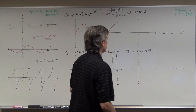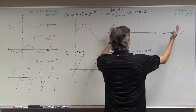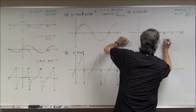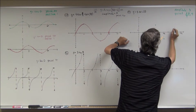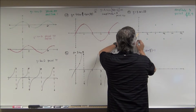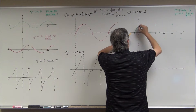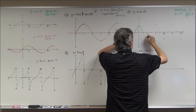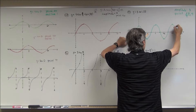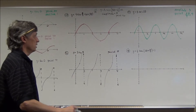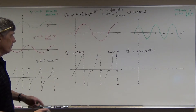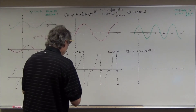My amplitude is 3, so I start at (0, 3), and halfway through at π/2 I'm down at negative 3. Halfway between those is where I cross the x-axis. The graph is squeezed horizontally and stretched vertically. For sine and cosine, get those key points — the maximum values, minimum values, and x-intercepts — and you have a definite pattern you can continue.